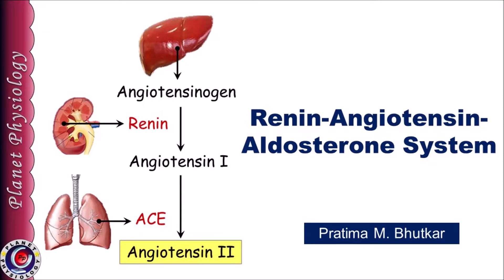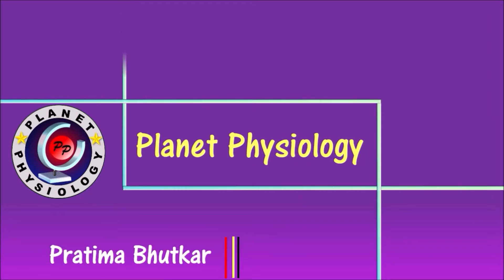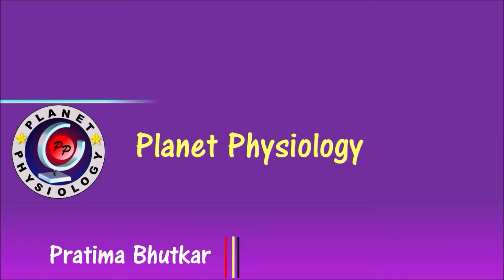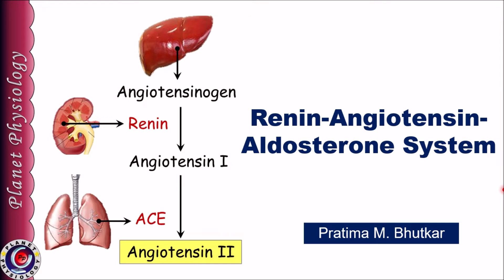Hi, this is Pratima from Planet Physiology. In this session, we are going to study the Renin-Angiotensin-Aldosterone system, which is also known as the Renin-Angiotensin-Aldosterone axis. The system is mainly concerned with regulation of extracellular fluid volume and mean blood pressure. So, let us study its details.